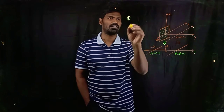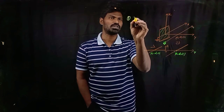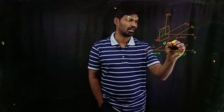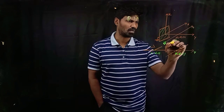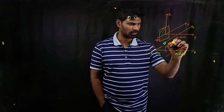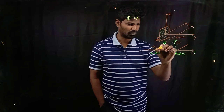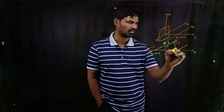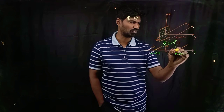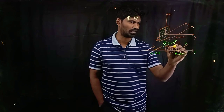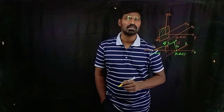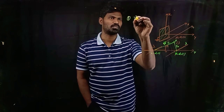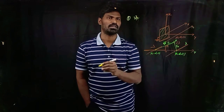Step 1 involves calculating the potential at a general point P somewhere in the region. I want to calculate what is the potential at this point. For this purpose, the distance from the image charge I am taking as r minus, and the distance from the real charge lambda I am taking as r plus. So first I calculate what is the resultant potential at point P. This is step 1.